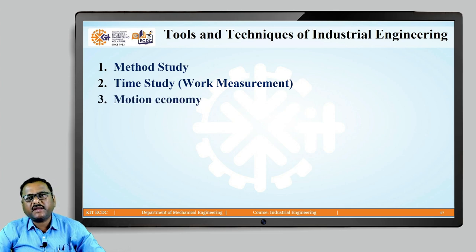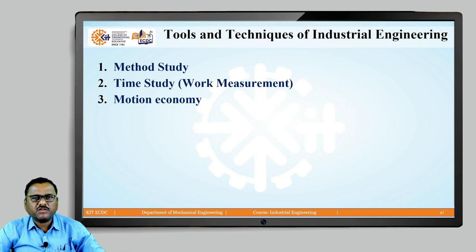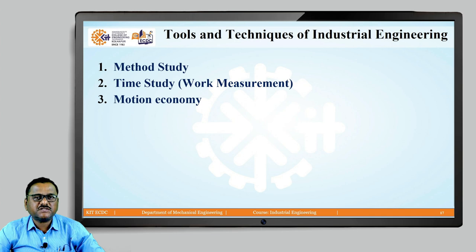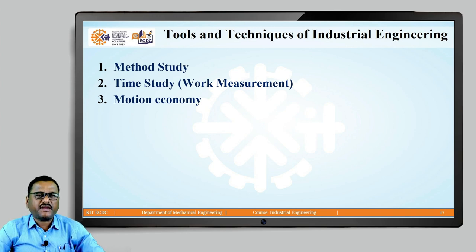The next tool is motion economy. There are various motions performed by a worker, and we want to find out whether those motions are required or not, whether it is possible to improve them, or whether there are unnecessary motions involved within that work cycle. We should eliminate those unnecessary motions so that only the essential motions for carrying out the job remain. The economy associated with motion is why it is called motion economy, and this is also a most important tool used by the industrial engineer.